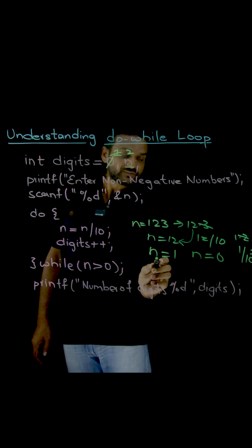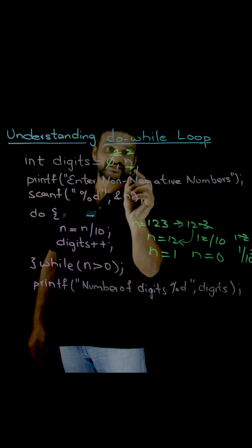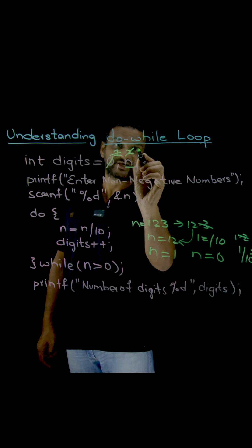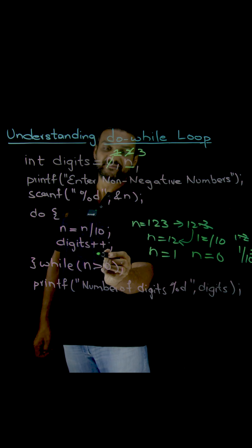So now what we have to do? Again, the digits, the count of digits will get incremented. So 1 divided by 0. The count will get incremented.